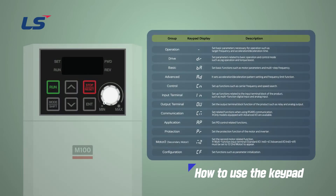Now, in the first order, let's look at the configuration of parameters of M100. There are 12 parameter groups in M100, and you can move between groups by pressing the Mode Shift key located at the bottom left of the keypad.